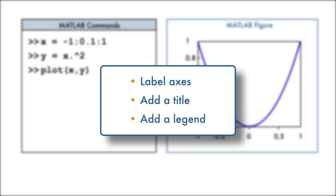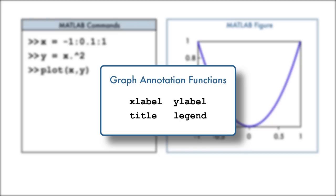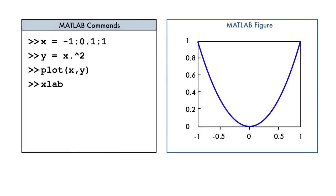In MATLAB, there are many ways to annotate and customize our graphs. Let's look at four commonly used annotation functions. We can add a label to the x-axis with the xLabel function. Notice that we pass the label enclosed in single quotation marks as input to the xLabel function.